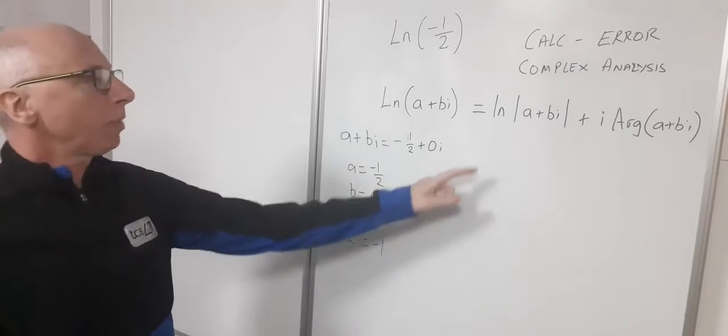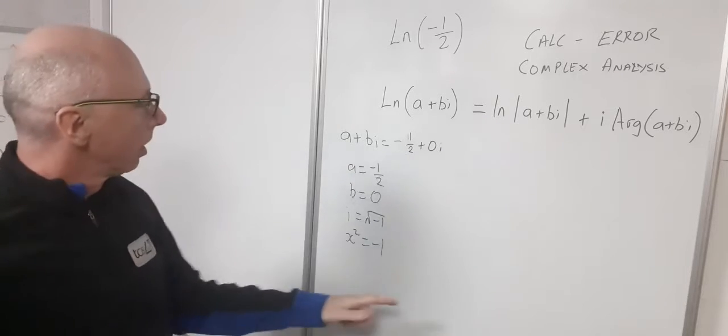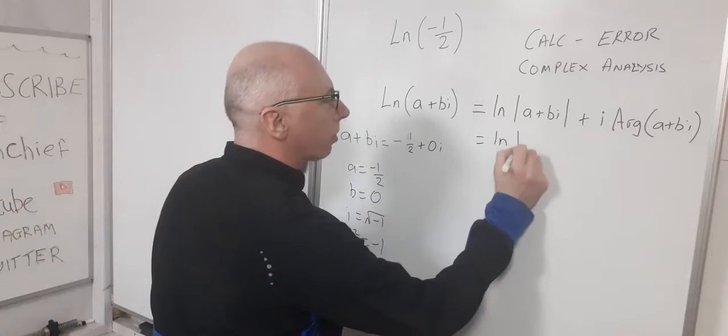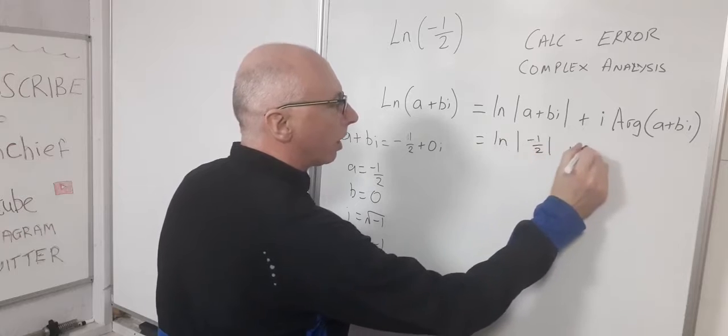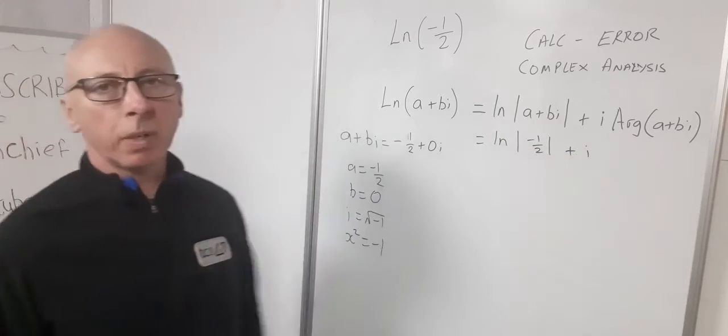Let's break this down into two parts. The log of a plus bi, well we've established we've got minus half. So we've got the natural log of minus one-half. And now what we need to do is find the principal argument of a plus bi.